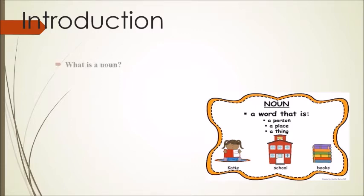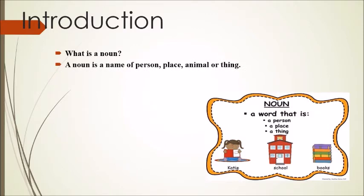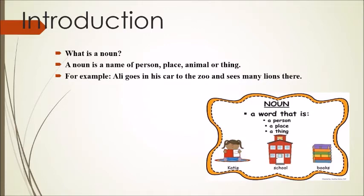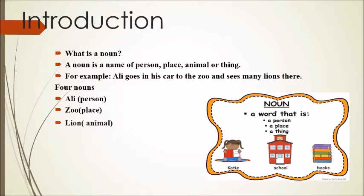A noun is a name of a person, place, animal, or thing. Let me give you one example for each — person: Ali; place: zoo; animal: tiger; thing: notebook. Let's read this sentence: 'Ali goes in his car to the zoo and sees many lions there.' Take out the nouns from this sentence. There are four nouns: Ali — person, zoo — place, lion — animal, car — thing.